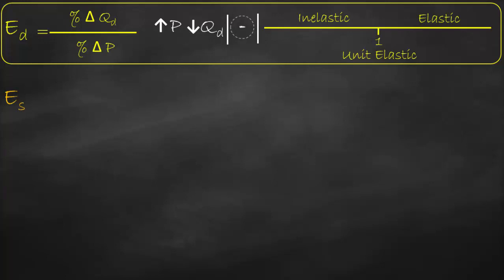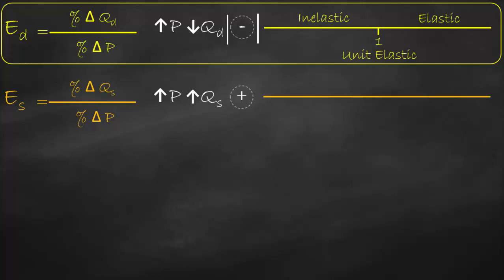The formula for price elasticity of supply is percent change in quantity supplied divided by percent change in price. Remember that we have a positive relationship between price and quantity supplied — they move in the same direction. If price goes up, quantity supplied goes up. Therefore, price elasticity of supply will always be positive, and the benchmark is also one, same as price elasticity of demand.